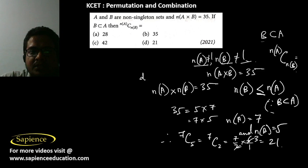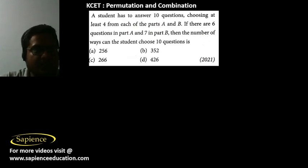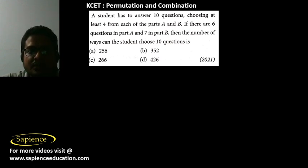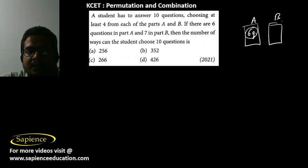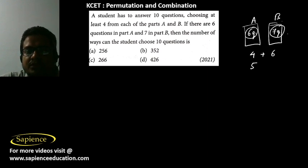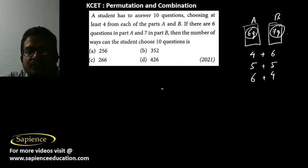Here it is told that a student has to answer 10 questions choosing at least four from each of parts A and B. There are six questions in part A and seven in part B. From part A he can choose 4 and from B he can choose 6, or he can choose 5 from each, or 6 from part A and 4 from part B.